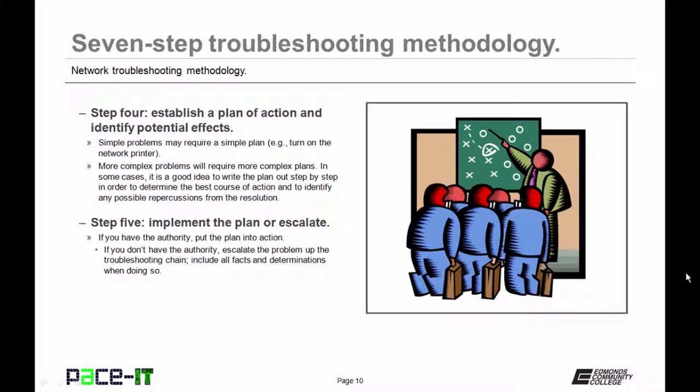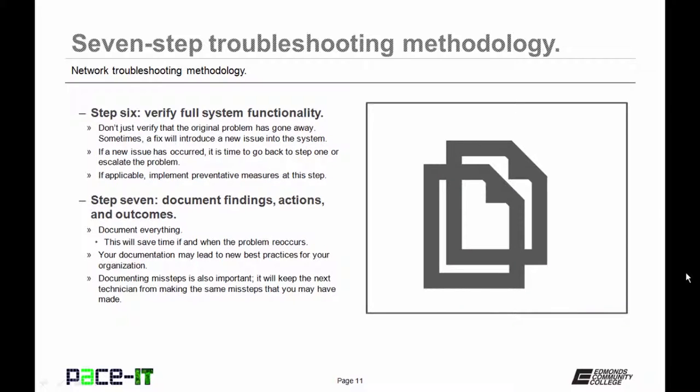Step five is to implement the plan or escalate the problem. If you have the authority, put your plan into action. If you don't have the authority, escalate the problem up the troubleshooting chain, including all facts and determinations when you're escalating the problem. Don't make that next level above you have to recreate everything that you've done. Once you've implemented your plan, it's on to step six.